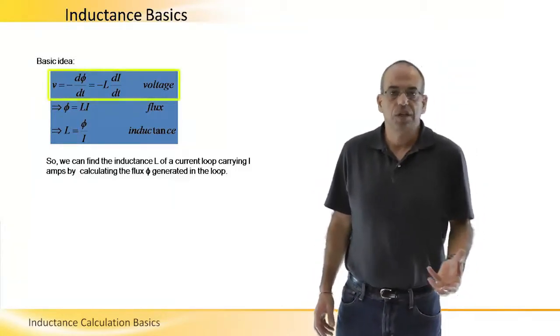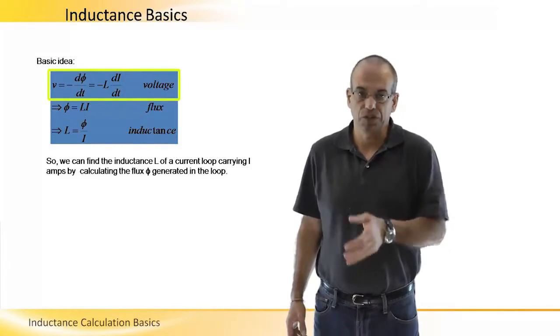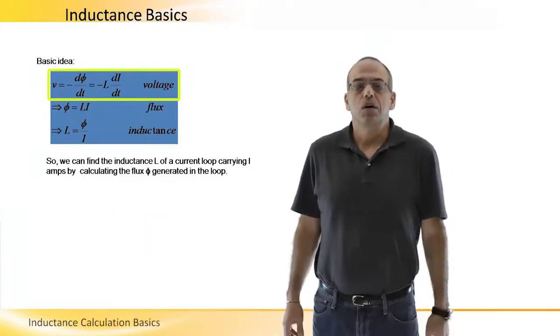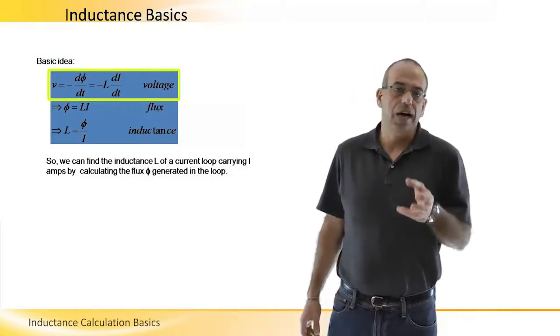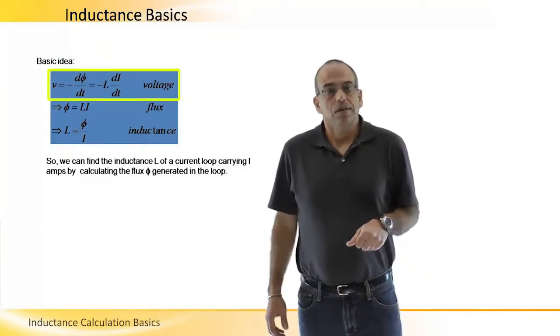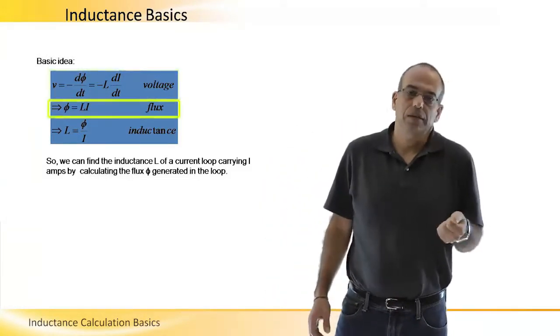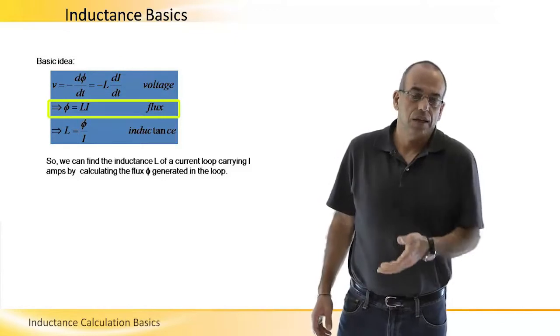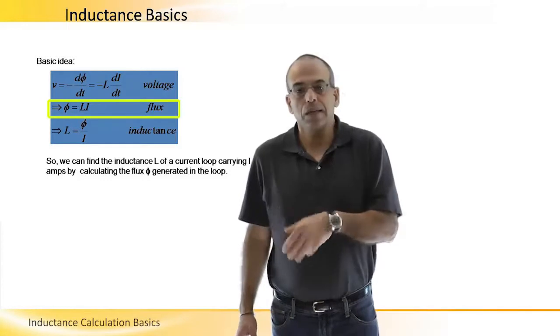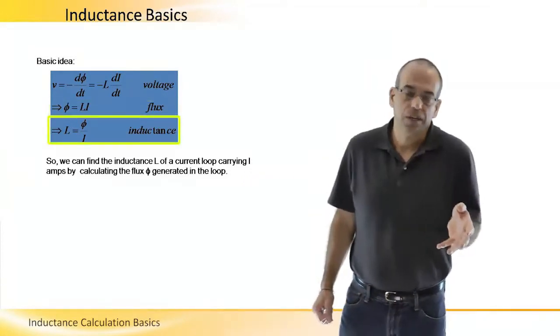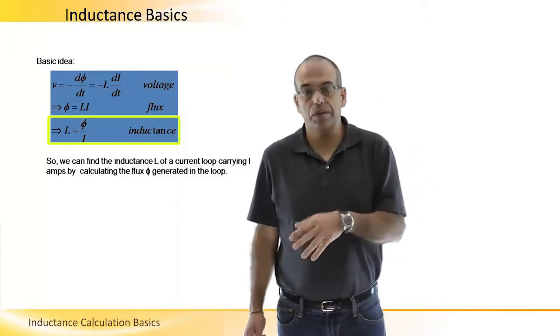We know that the voltage is equal to minus dφ/dt, or it is minus L (which is the inductance) dI/dt. If we integrate for time, we will find that φ (the flux) equals L (the inductance) multiplied by the current. This is how we can extract L by dividing the flux over the current.